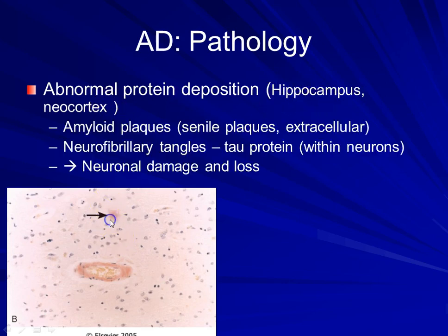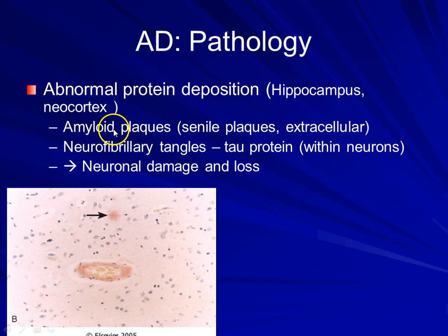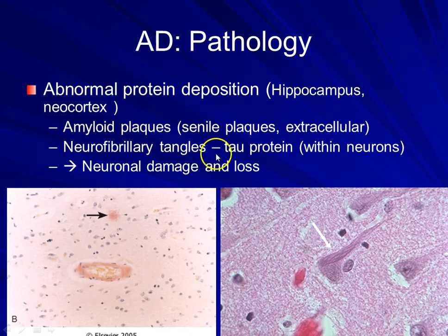What you're looking at is actually the senile plaque or the amyloid plaque, which is made up of beta amyloid. And remember, this is extracellular — if you recall studying amyloid earlier on in general pathology, it is always extracellular. Sometimes you may also see amyloid deposition in the blood vessel walls. Now, neurofibrillary tangles are made up of tau protein, and in contrast to amyloid which is extracellular, neurofibrillary tangles are intracellular and are actually found within the neurons.